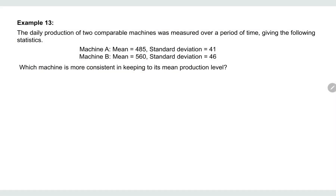Example 13: The daily productions of two comparable machines were measured over a period of time, given the following statistics. For Machine A, the mean is 485 and the standard deviation is 41. For Machine B, the mean is 560 and the standard deviation is 46.